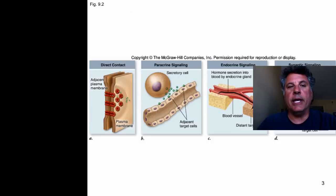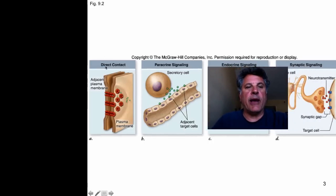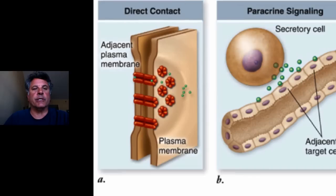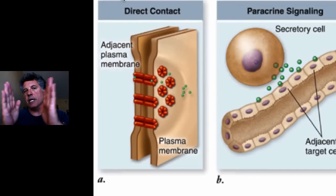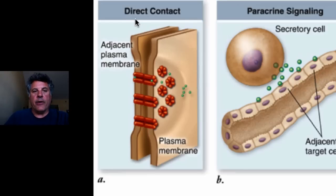We can divide the types of cell signaling that occur between cells into various types based on the distances involved. First, we have direct contact, or juxtacrine signaling — juxtaposed means to be very close together. In direct contact, the molecules on the surface of cells are actually in contact with one another, and there are several types of direct contact that we'll be studying later.